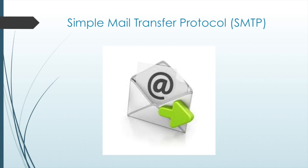SMTP transfers mail efficiently and reliably. For SMTP to work properly, the mail message must be formatted correctly and SMTP processes must be running on both the client and the server. A message requires a header and a body; the header must have a recipient email address and a sender address. When a client sends an email, the client SMTP process connects with the server SMTP process on well-known port 25. After the connection is made, the client attempts to send the email. When the server receives the message, it either places it in a local account or forwards it using SMTP to another mail server. If the destination email server is not online or is busy, SMTP spools messages to be sent at a later time. Periodically, the server checks the queue and attempts to send them again.